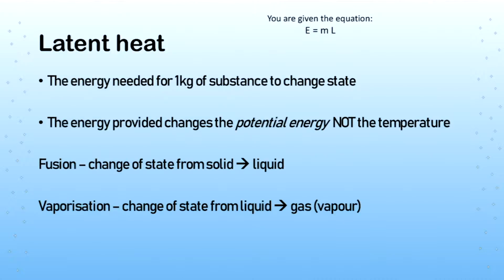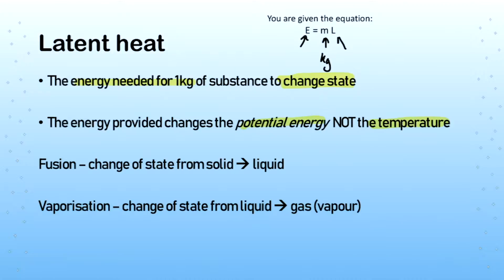Latent heat is the energy needed to change a material's state — specifically, the energy needed for one kilogram of a substance to change state. This changes the potential energy, not the temperature or kinetic energy. The equation, which is given on the equation sheet, is: energy equals mass times specific latent heat (E = mL). The specific latent heat tells us how much energy per kilogram is needed to change state.